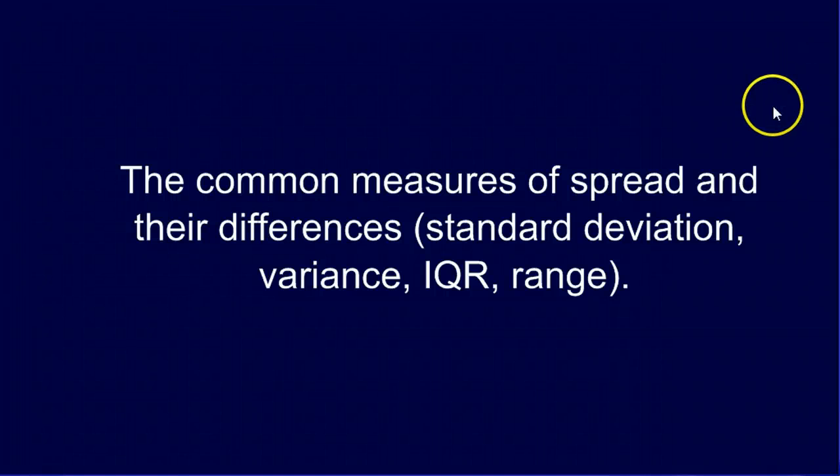The other important thing that we use when describing a quantitative distribution is spread, how far apart things typically are. And the most common measures of spread are the standard deviation, variance, IQR, and range.